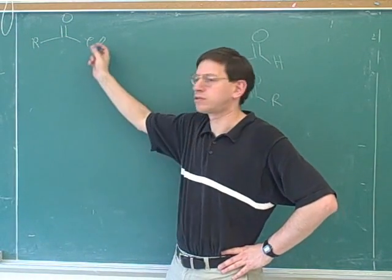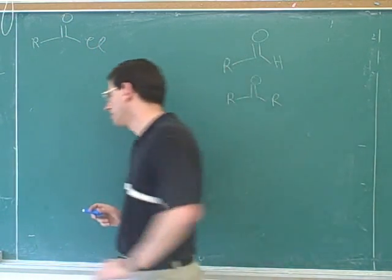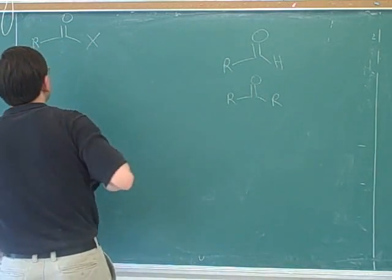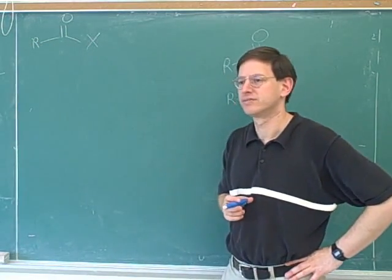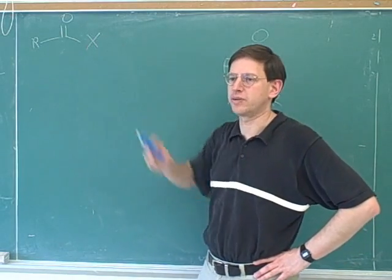Now, this is what we would call an acyl chloride. Or, in general, if we use X for a halogen, it would be an acyl halide. Carbonyl connected to a halogen. Right.